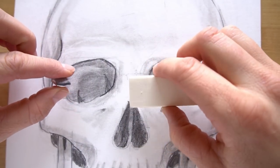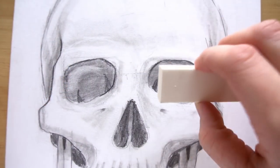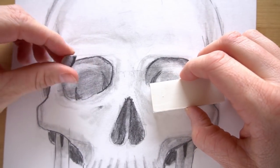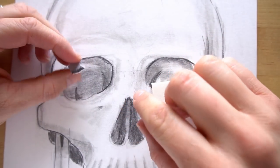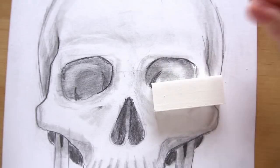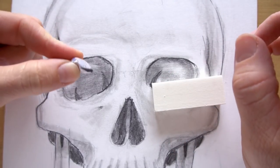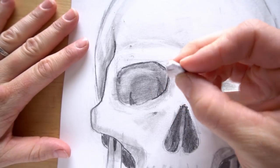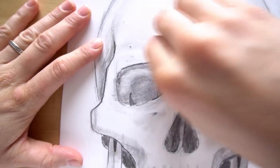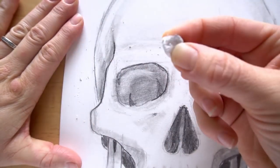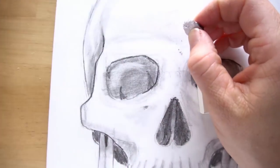One caution when you're using the vinyl eraser is to make sure you clean it off. If you have some charcoal on this or especially if you have some colored chalk and then you go to erase something on your white paper you can see a little bit of blue on this. Sometimes that blue will come off on your paper. To avoid that just get a sketch piece of paper and do some erasing. Clean it up a little bit and then you can use it. It'll be good as new.